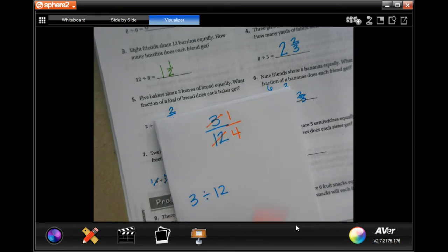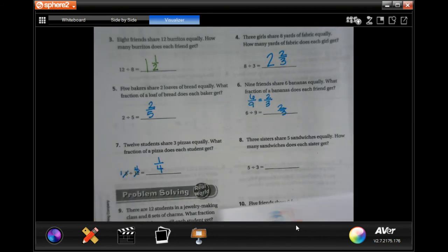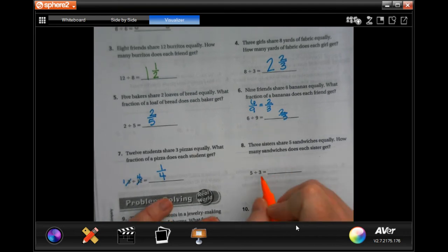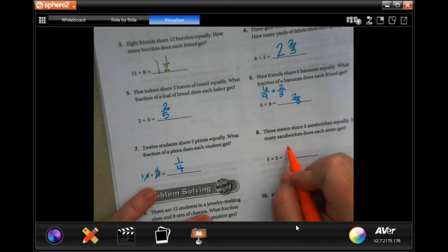Same exact thing guys. So this one, this number is bigger than the second number. So I know that three goes into five one time. One times three is three, five minus three is two.